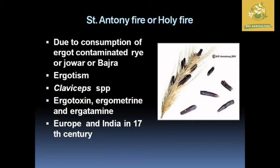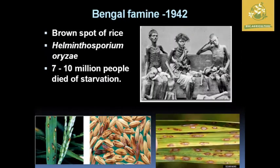One of the historically impactful plant disease events is the Bengal Famine of 1942, caused by the brown spot of rice — Helminthosporium oryzae. This led to seven to ten million people dying mainly due to starvation during that period.